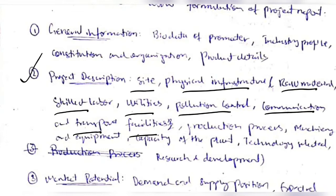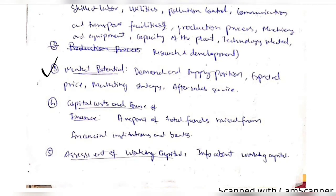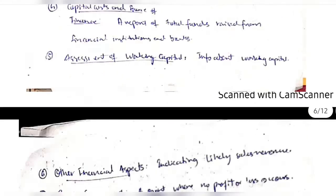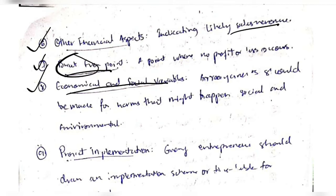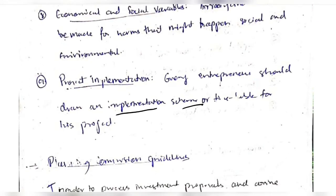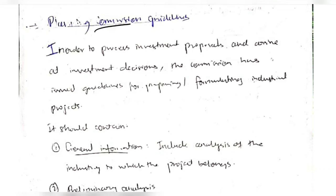Moving on to market potential: what is the demand and supply, capital cost, the finance and the total funds raised from the institutions, and the assessment of the working capital about the employees and other financial aspects like expected sales revenue and break-even point — which is the point where the business is neutral, meaning no profit or no loss. Also covered are economical and social variables and project implementation, meaning the entrepreneur should have a scheme or roadmap of what the project is with timings for each of those steps. The commission has put some guidelines to follow when doing a project.